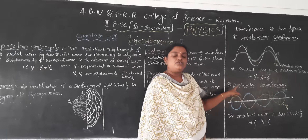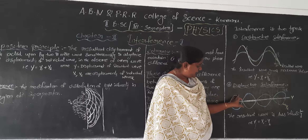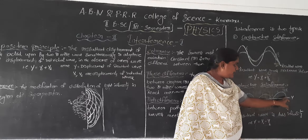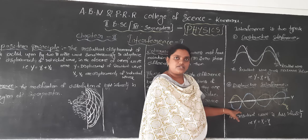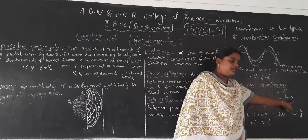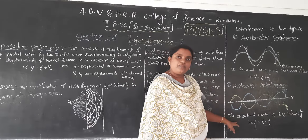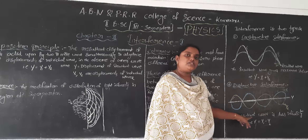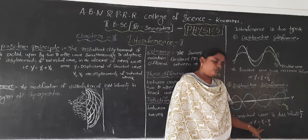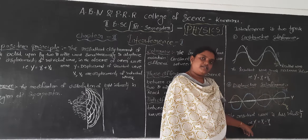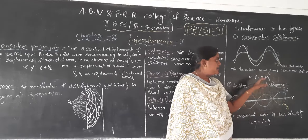Number two is destructive interference. In destructive interference, two waves travel in opposite directions — the yellow color is one wave and the blue color is the other wave. When they combine in opposite directions, the resultant displacement is minimum, giving minimum intensity. So in destructive interference: Y equals Y1 minus Y2, where Y is the resultant displacement and Y1 and Y2 are the displacements of the individual waves.